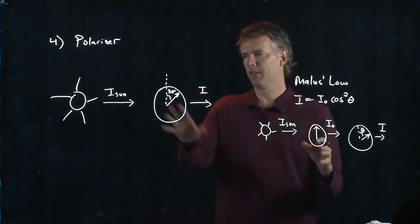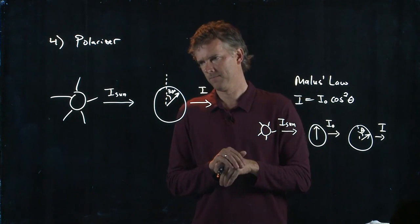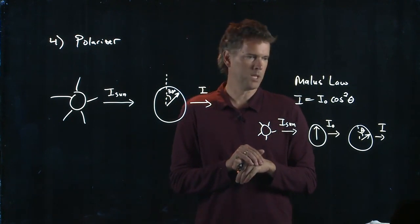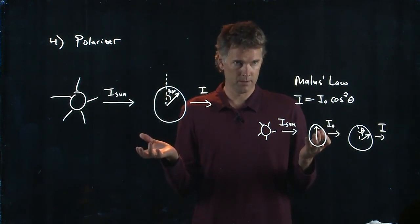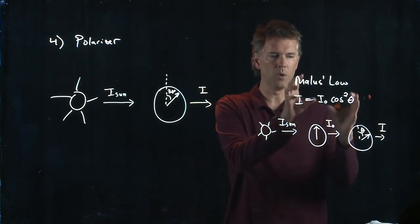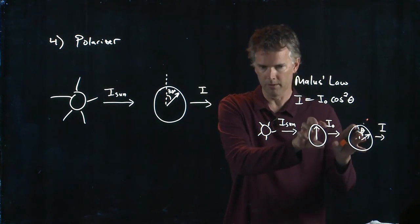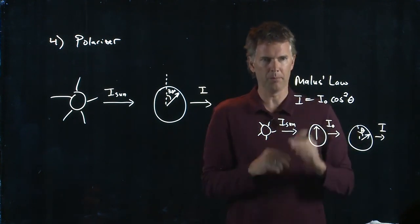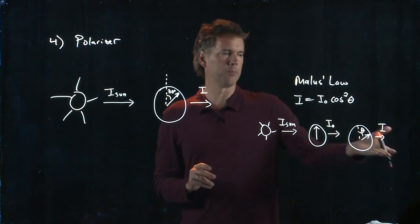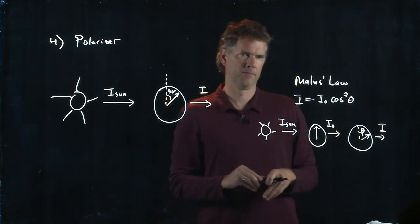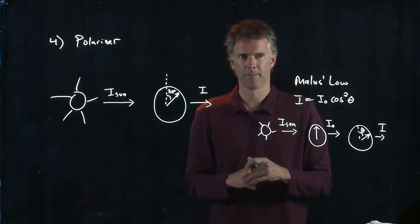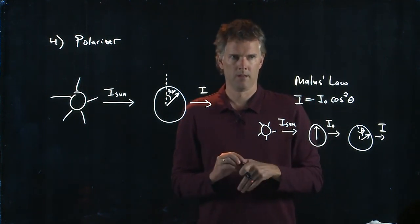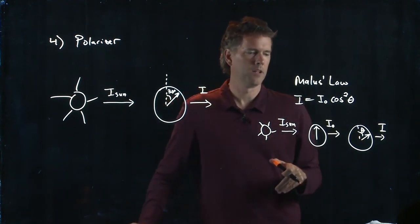But that looks a little different than this, doesn't it, Eudoria? Because here, we only have one polarizer. Whereas in Malus's Law, we drew it with two polarizers. So what's the purpose of that first polarizer in this picture? What's the purpose of this polarizer?